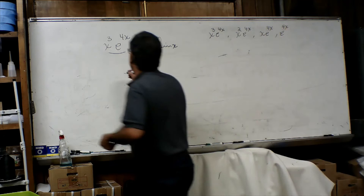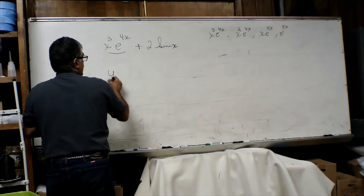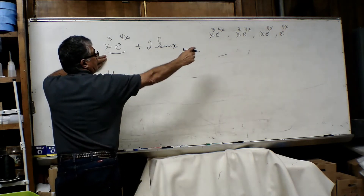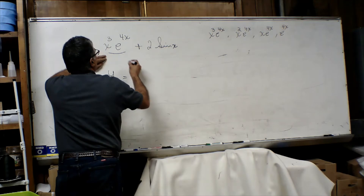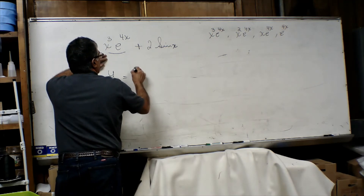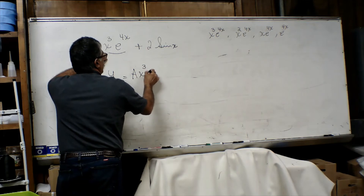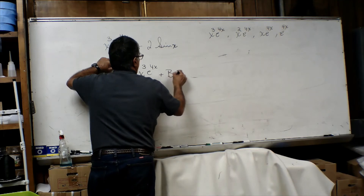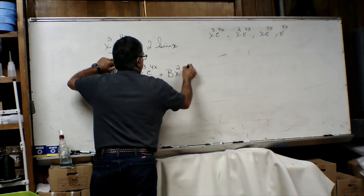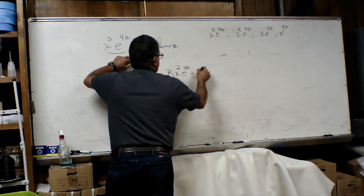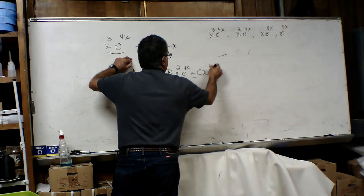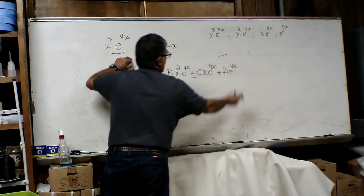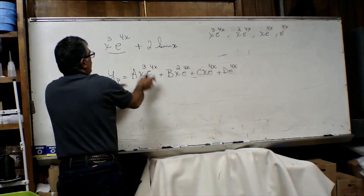So for this portion, the particular solution that we have to assume must be in the form of: A x cubed e to the power 4x, plus B x squared e to the power 4x, plus C x e to the power 4x, plus D e to the power 4x. This is what we have to assume for this portion.